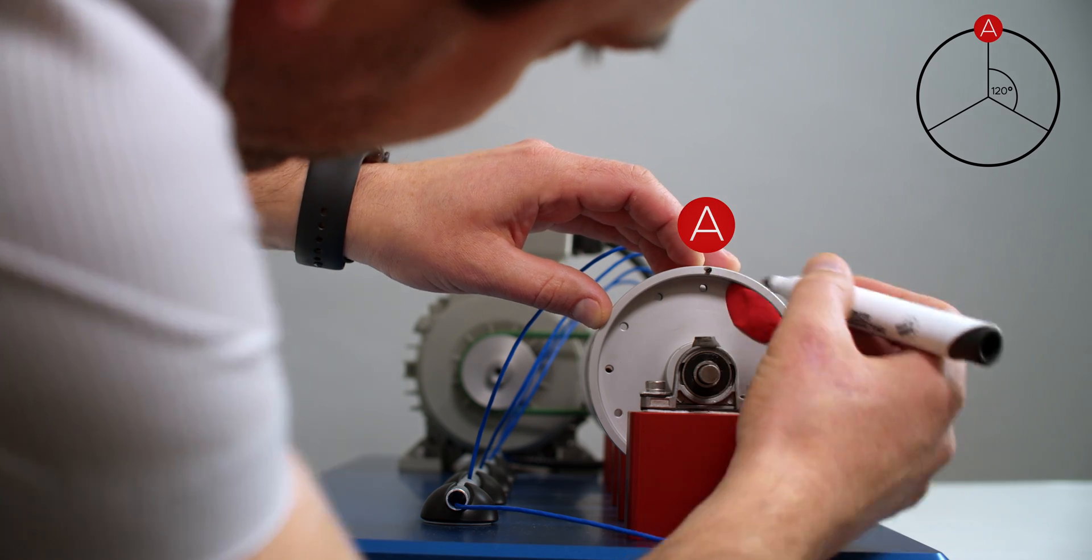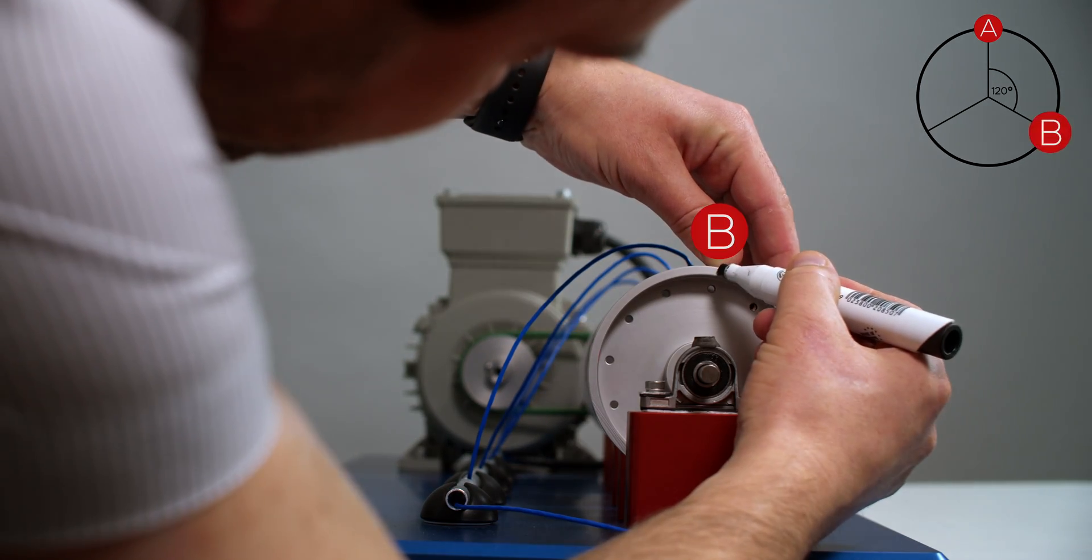I will mark A, B and C points on the wheel which will be shifted 120 degrees.